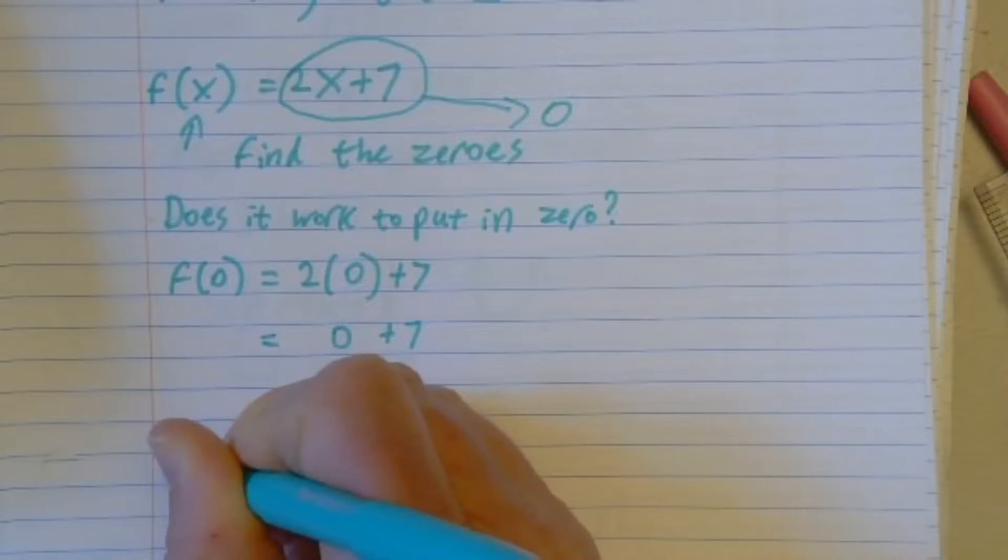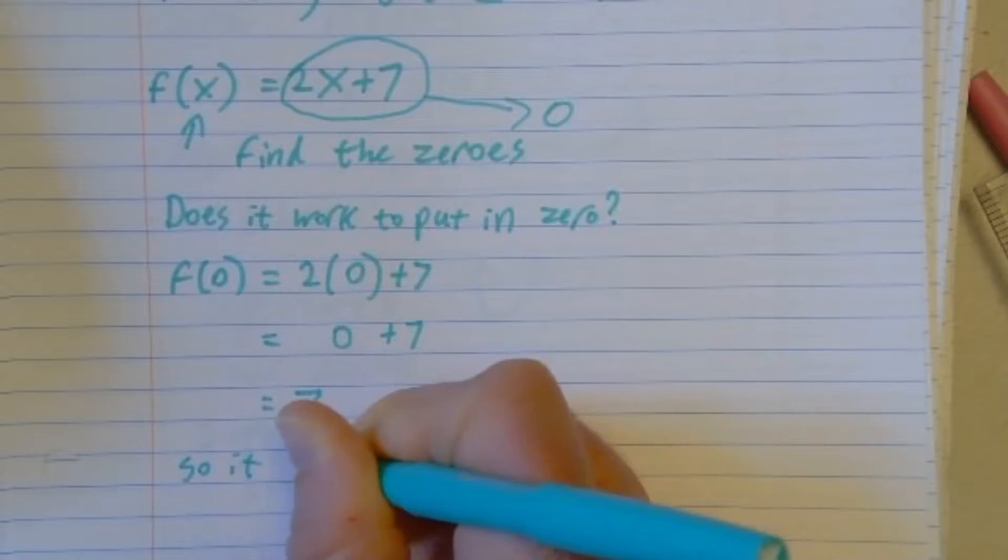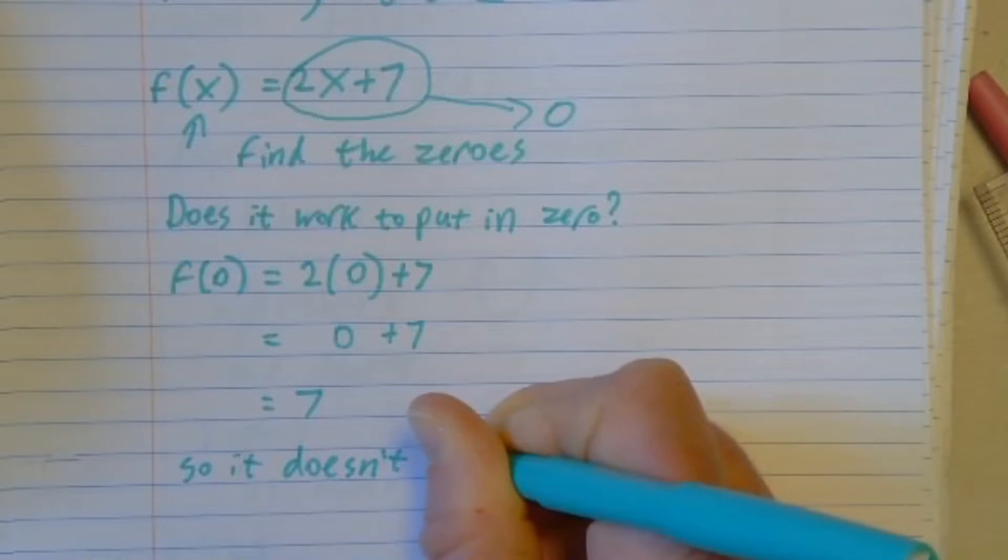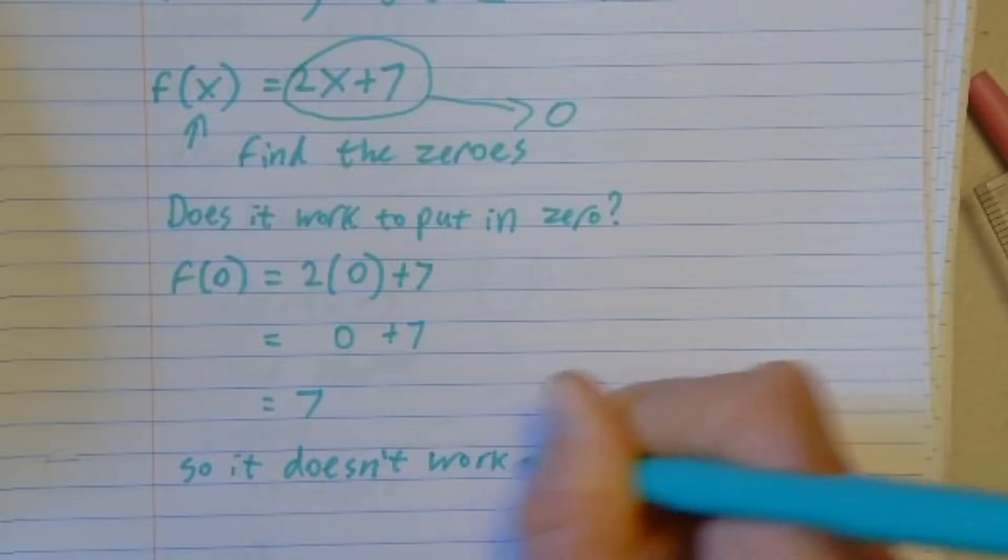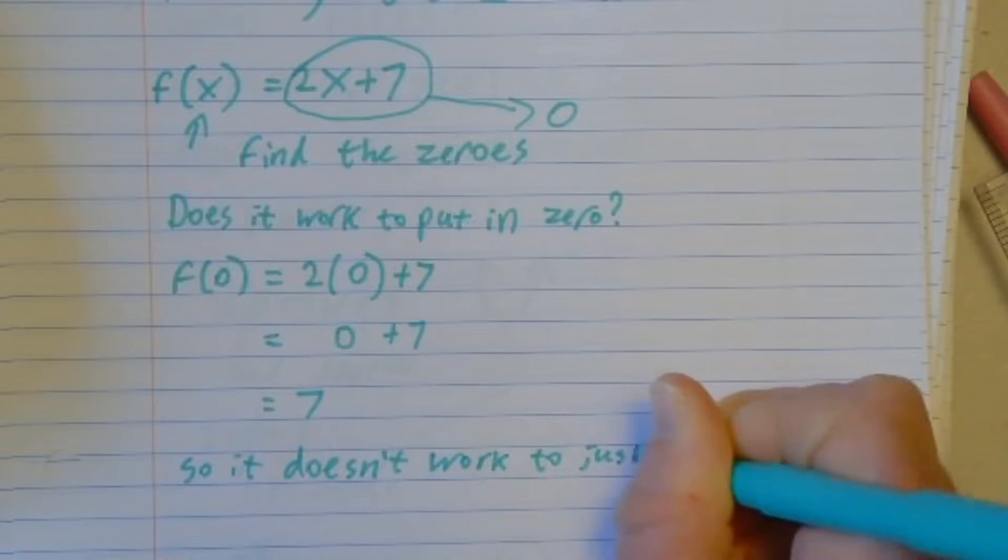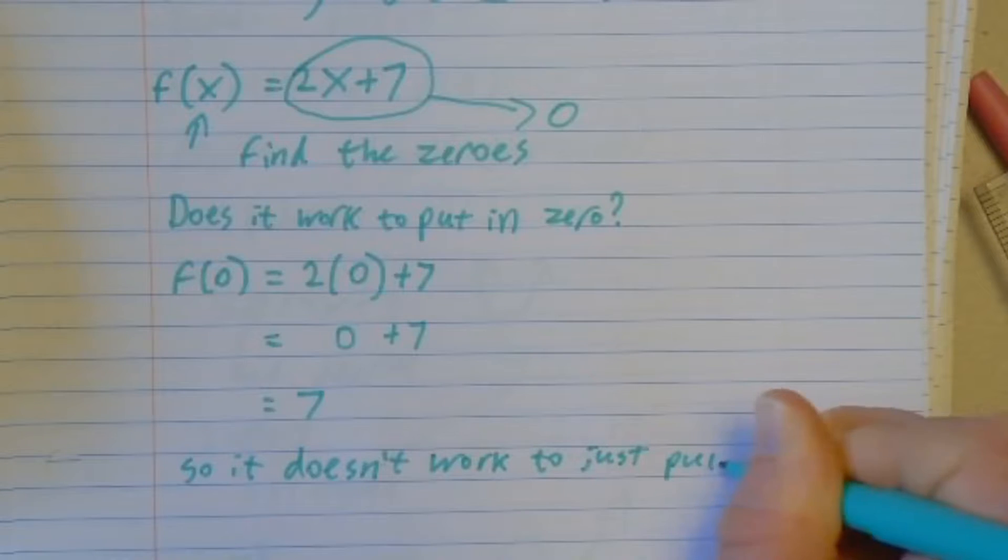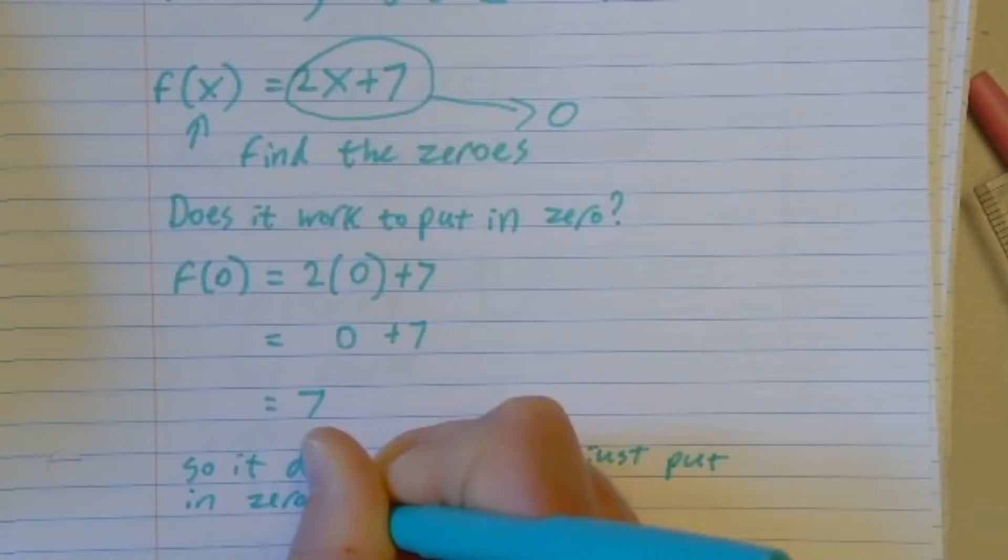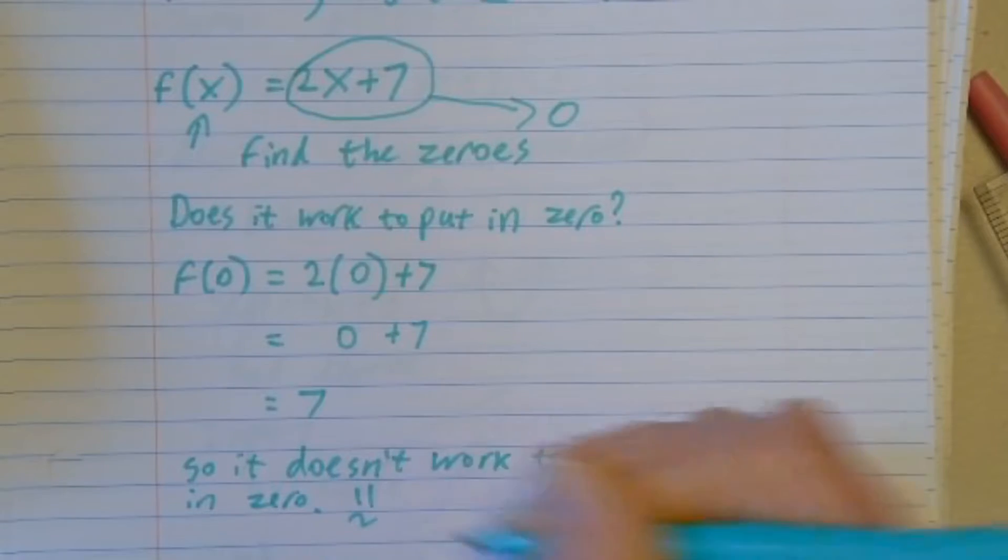So it doesn't work to just put in zero. Rats.